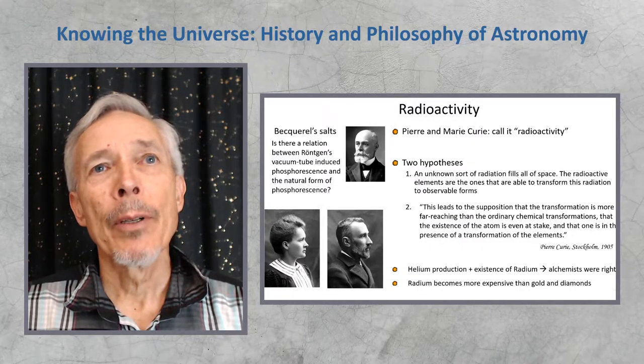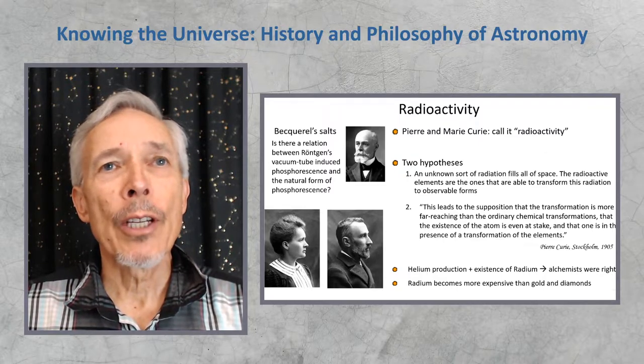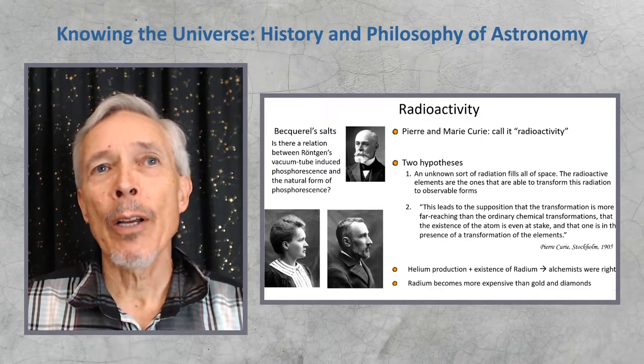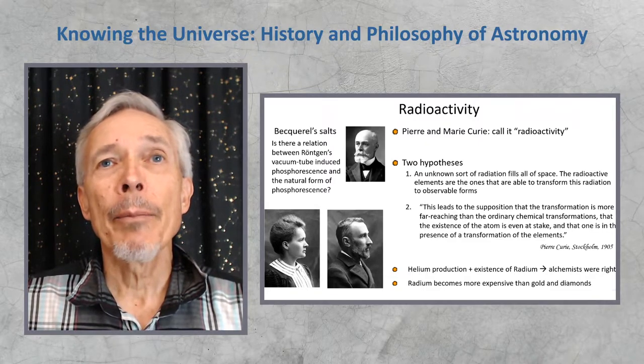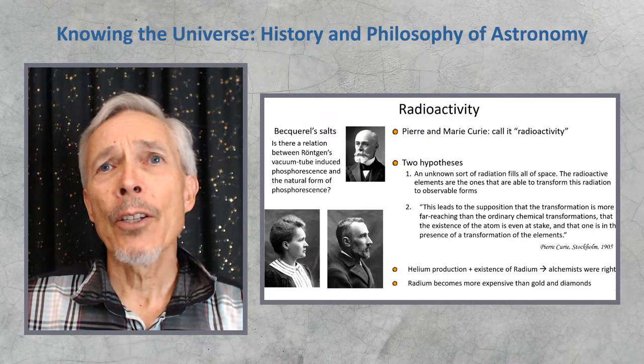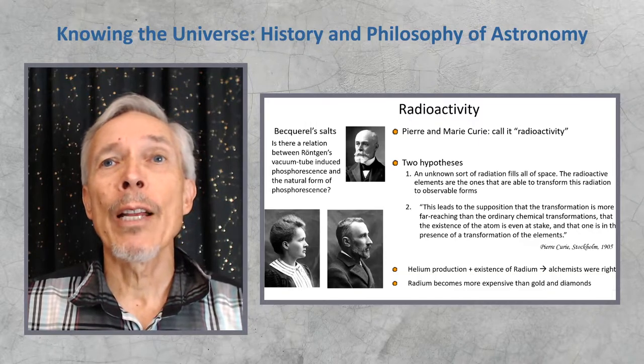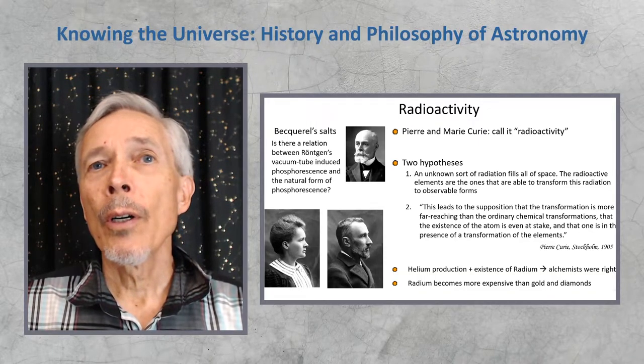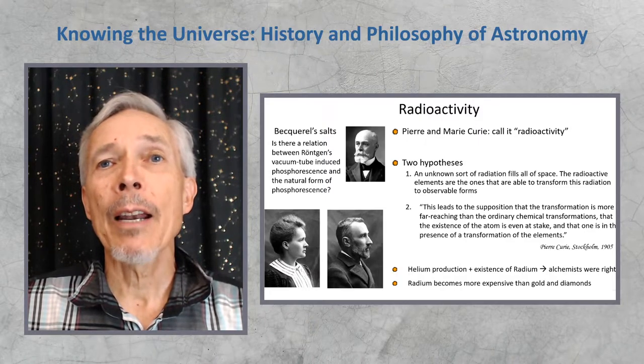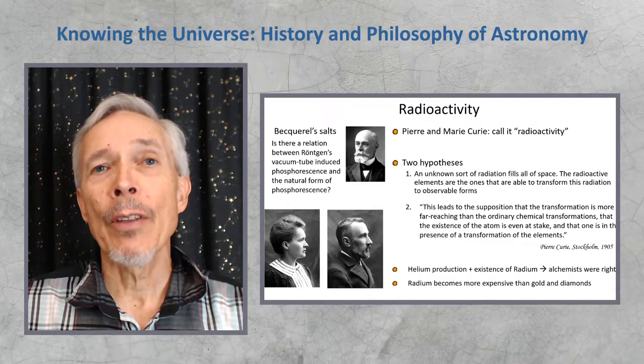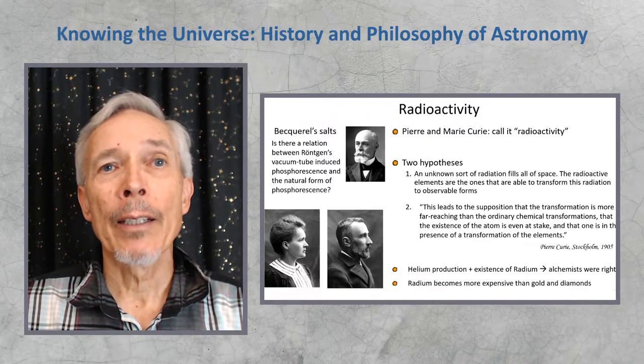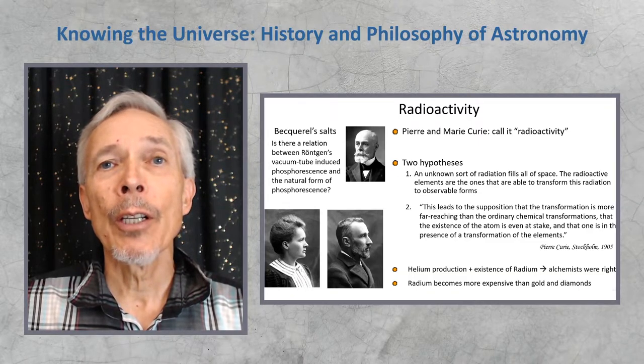Radioactivity was found around the same time. Henri Becquerel found salts whose energy emitted and showed light. Was there a relation between his vacuum tube-induced phosphorescence and this natural form of phosphorescence from material you could dig from the ground? Marie and Pierre Curie found that it was, and they called it radioactivity. There were two hypotheses, that an unknown radiation fills all of space, and the radioactive elements are the ones that are able to transform this radiation to observable forms. Or, the supposition that the transformation is far-reaching than any ordinary chemical transformation, and that the existence of the atom is at stake, and that one is in the presence of the transformation of the elements. That's indeed what they had seen. Elements could transmute. The alchemist's speculation was correct. Heavy elements decayed radioactively with the emission of energy to become different elements.